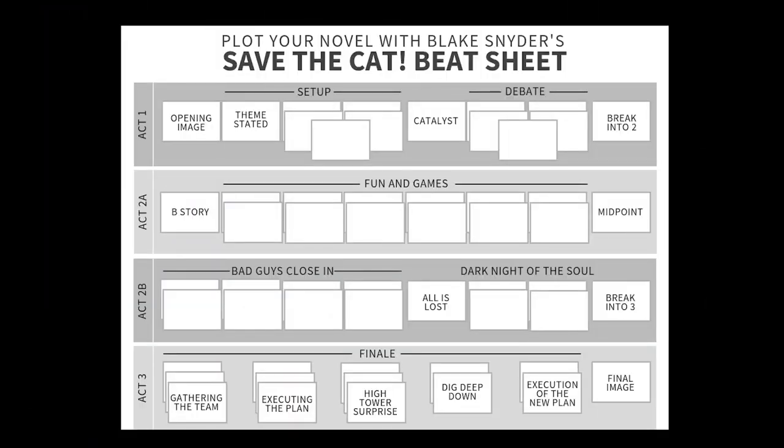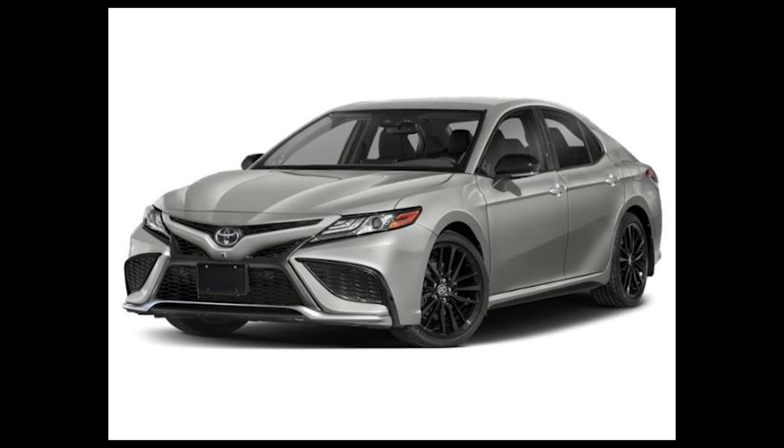Just like there are things that make a car a car, there are things that make a story a story. You can dress up a car and put all kinds of things on it to make it a specific model — like Save the Cat, Story Circle, or Hero's Journey — but those are models of cars. To be a successful screenwriter, you have to know not only what models are available, but what makes a car a car, or what makes a story a story — the pieces you need to make sure you actually have a story and not a tricycle.